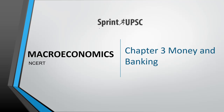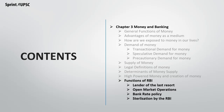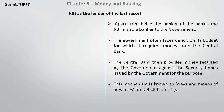Welcome to Sprint UPSC. We are covering Macroeconomics of Class 12 Chapter 3, Money and Banking. We have covered all topics in our previous videos, and in this video we are going to cover the last topic of our chapter. Let's start with the topic: What are the functions of RBI?